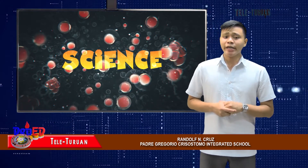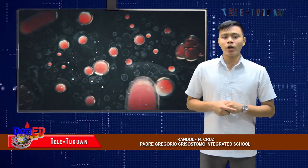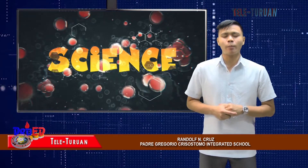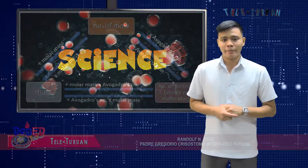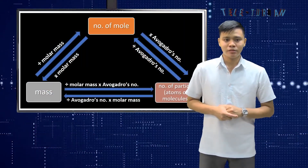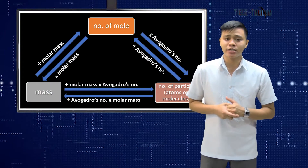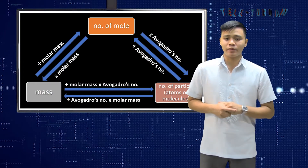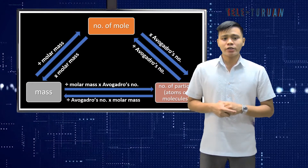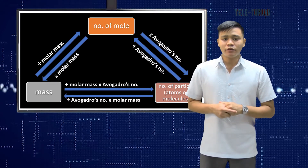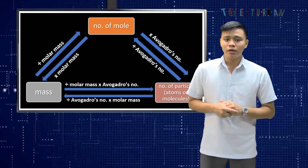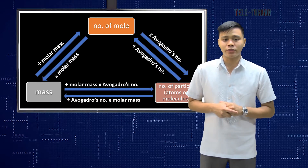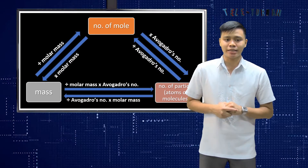Let us begin with the relationships among number of moles, mass, and number of particles. This diagram explains the computations about the mole concept. We can use this diagram to find the number of moles, number of particles which can be atoms or molecules, and mass.